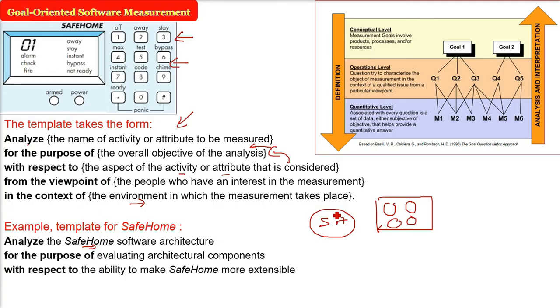And what is with respect to? We need to write the aspect of the activity that is to be considered. So with respect to, here we will write the ability to make SafeHome software or the product more extensible.